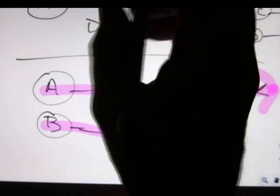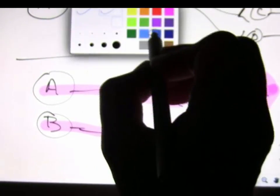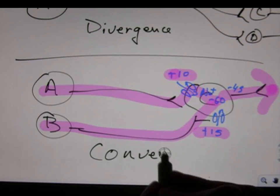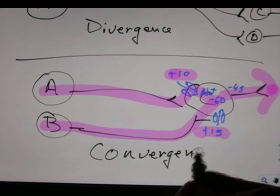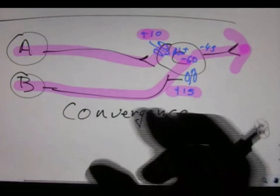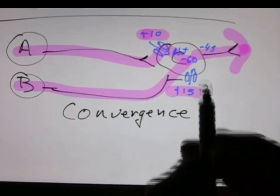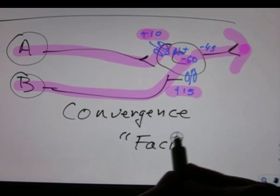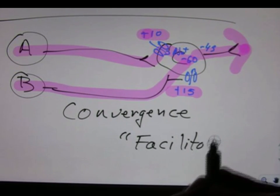So this is two words, it's convergence, because two combine. And this example I gave you where the two combined will get an action potential, but neither one alone is called facilitation.